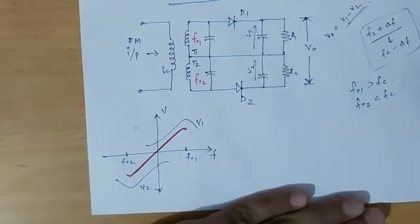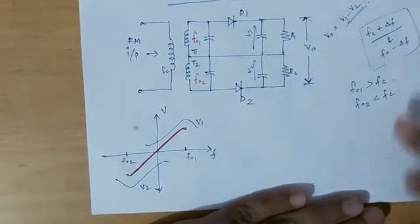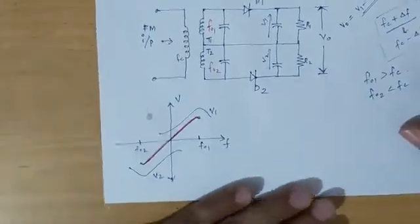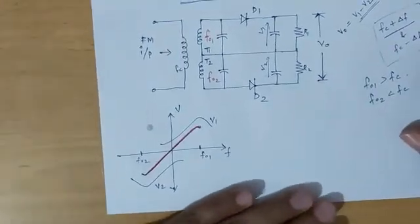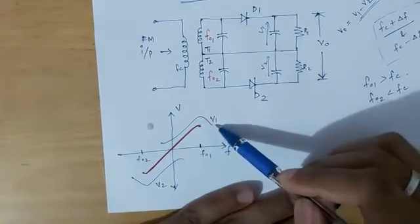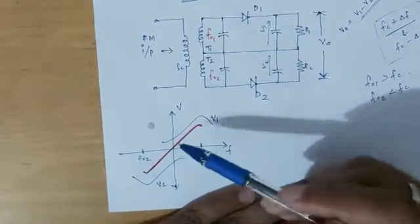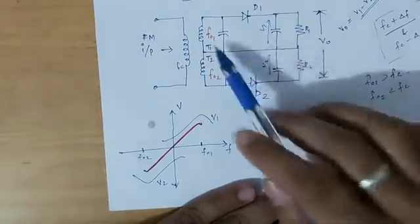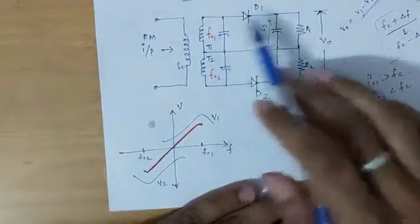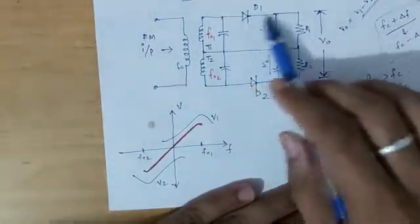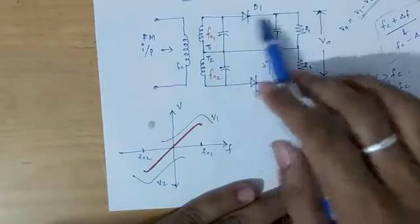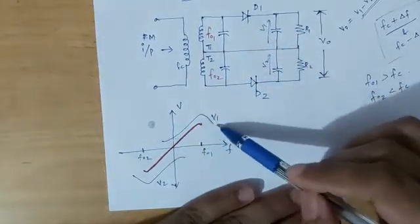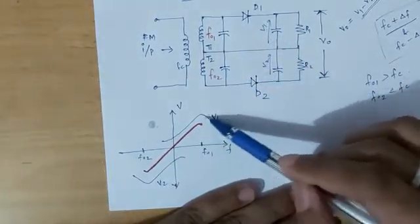Now we have the characteristic curve of the balanced slope detector. The X-axis represents frequency and the Y-axis represents voltage. The V1 curve corresponds to the upper tuned circuit, which is the envelope detector output — that is the frequency-voltage curve for the upper section.